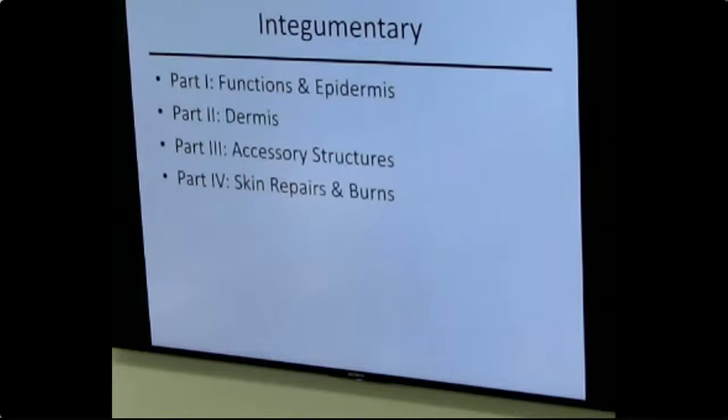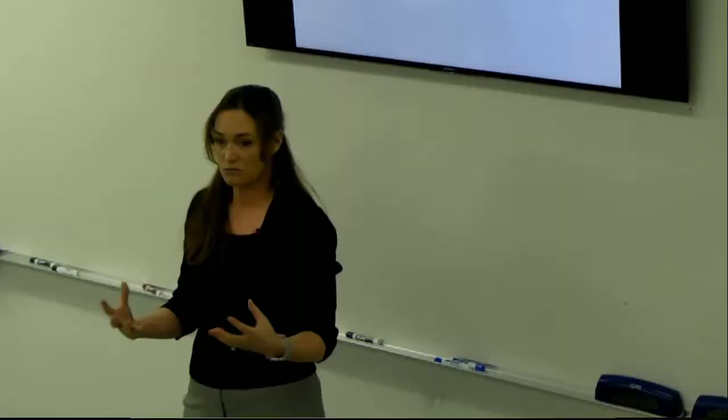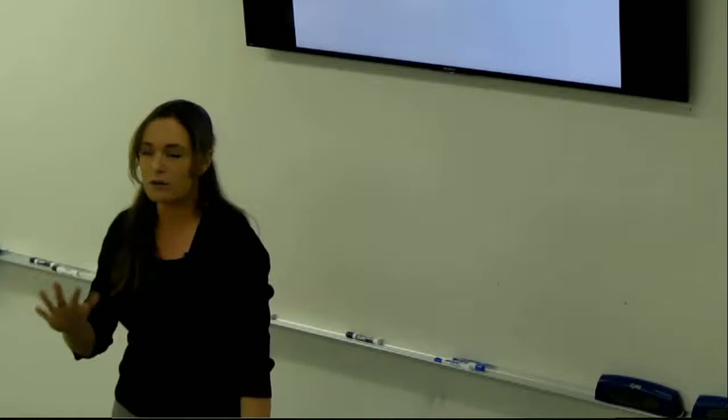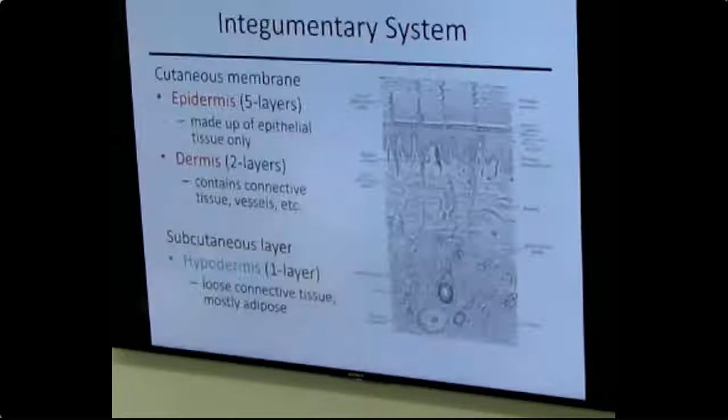What we're going over today is primarily the functions of the skin as a whole, as well as the epidermis — our stratified squamous epithelial tissue sitting on top of the dermis. The dermis is the true skin made of dense irregular connective tissue. We'll also talk about accessory structures like glands and hair follicles, and then finish with skin repair and burn classification.